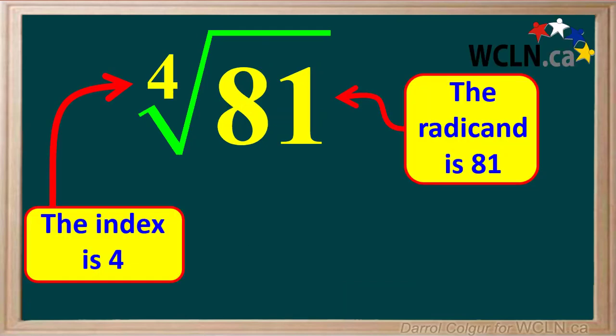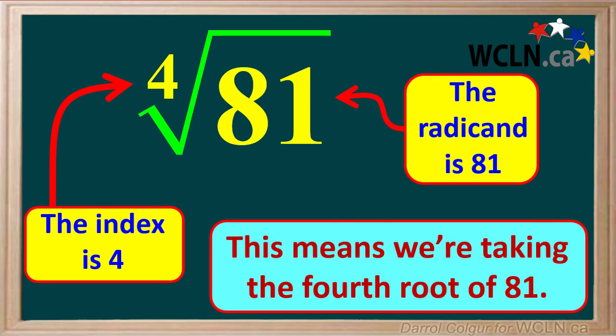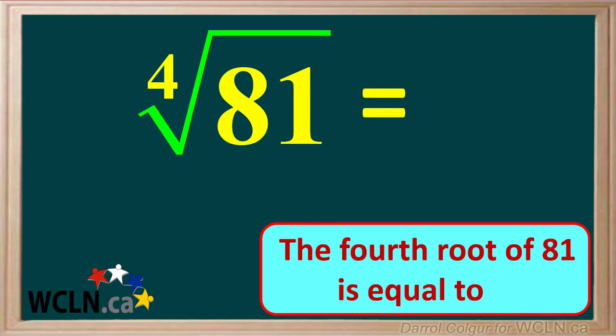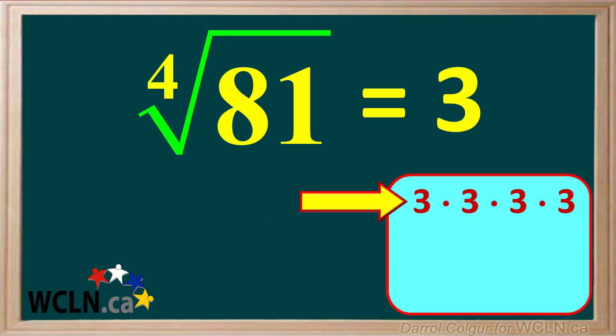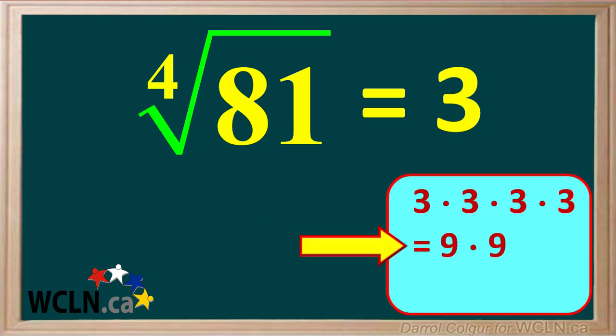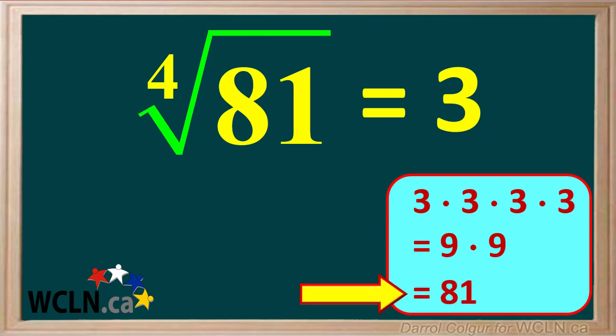In this expression the index is 4 and the radicand is 81, which means we're taking the 4th root of 81. The 4th root of 81 is equal to 3. This means that 3 multiplied by itself 4 times is equal to 81 — 3 times 3 times 3 times 3 is the same as 9 times 9, which is equal to 81.